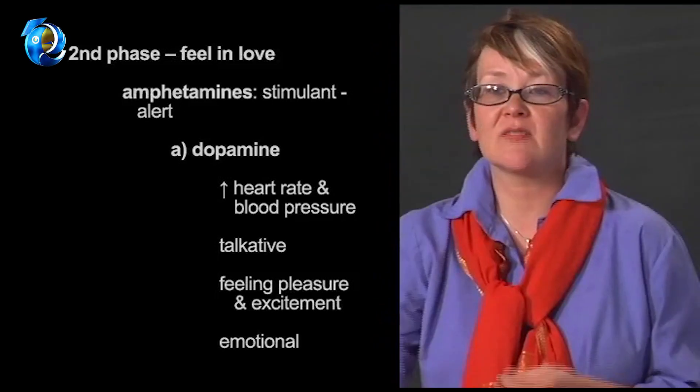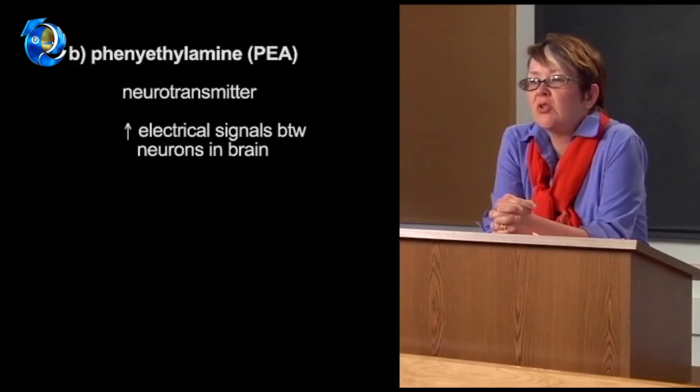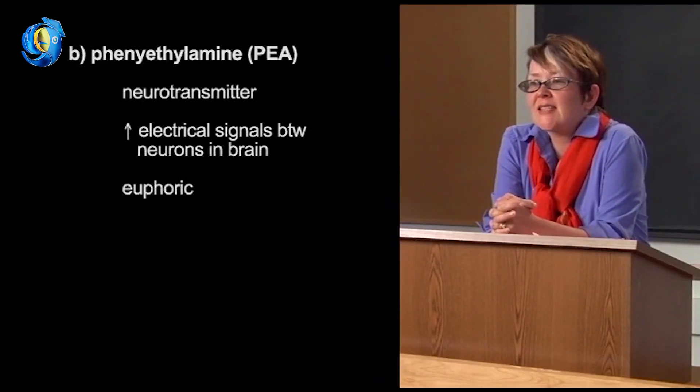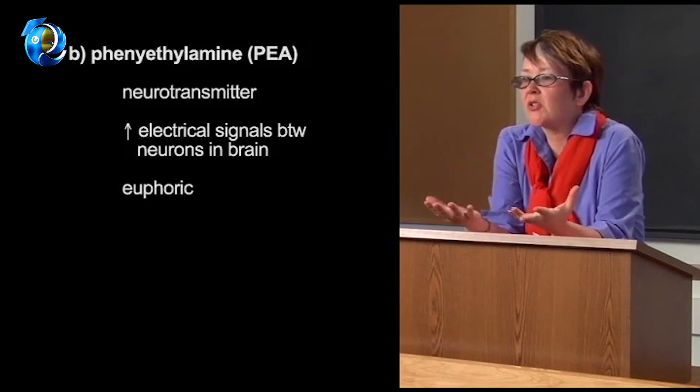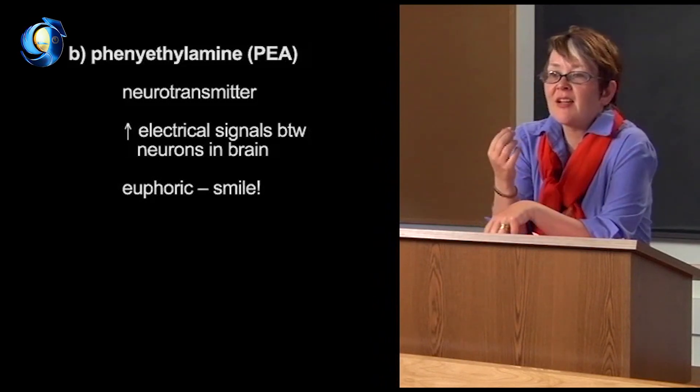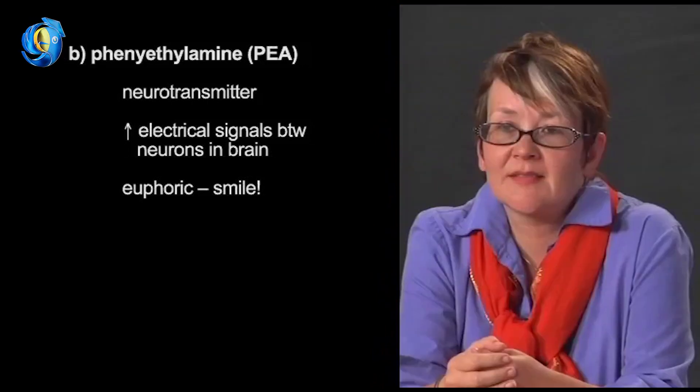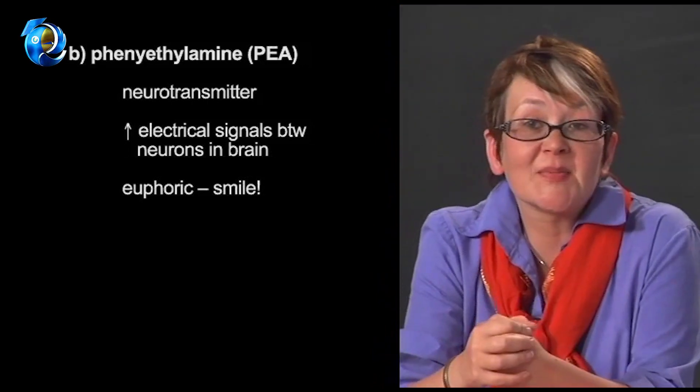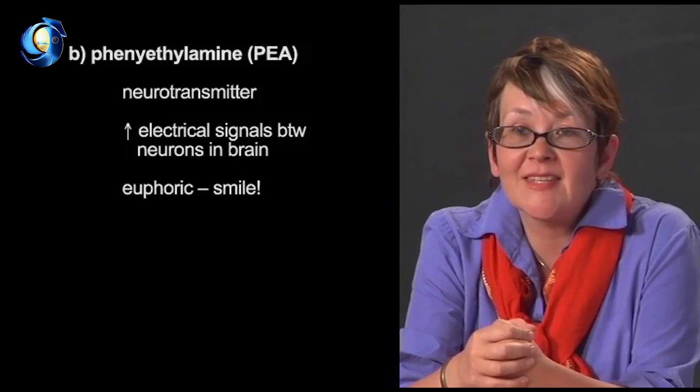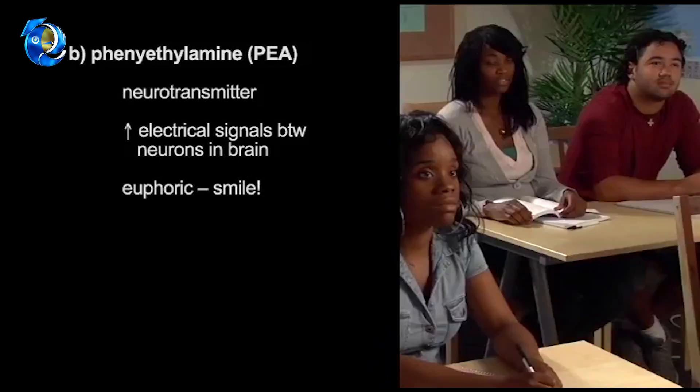The other chemical released in this phase is PEA. PEA is a neurotransmitter, which means it increases the electrical signals between the neurons in the brain. This makes us feel euphoric. It's the chemical that makes us smile a lot when we're first in love and feel like we're in some kind of heavenly world. But because our body develops a tolerance to PEA, the euphoric feelings gradually disappear.